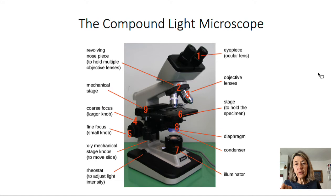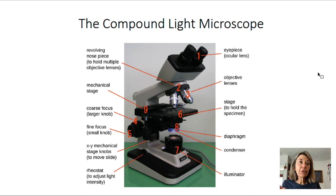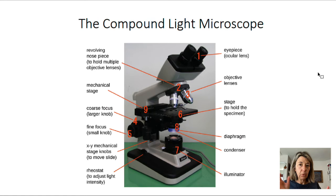Additional parts of the microscope include the focusing knobs: the coarse knob moves the stage up and down when you start and finish, and the fine knob is for precise focusing. There are also stage movement knobs — you don't move the stage by hand, you use the knobs. Be sure you can recognize all parts in a diagram or picture and know the function of each part.